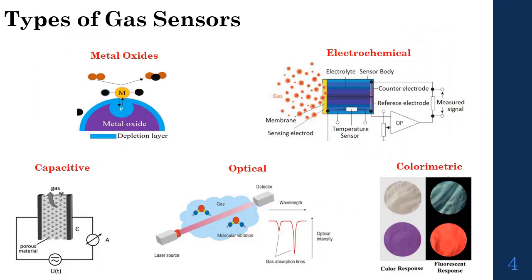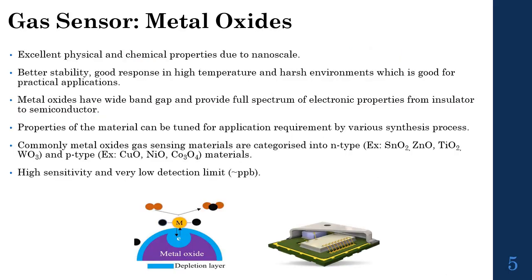There are different types of gas sensors, such as metal oxides, electrochemical, capacitive, optical, and calorimetric. Each has its own physical and chemical properties. Metal oxides have better stability and good response in high temperature and harsh environments, which is good for practical applications. Other than this, metal oxides have a wide band gap and provide a full spectrum of electronic properties from insulator to semiconductor. These properties can be fine-tuned for application requirements by various synthesis processes. Commonly, metal oxide gas sensing materials are categorized into two types: N-type and P-type materials. In general, metal oxides have high sensitivity and very low detection limits, even down to PPB — parts per billion — level.